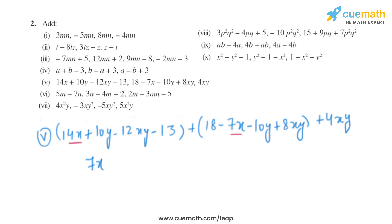For the xy terms: minus 12xy plus 8xy gives us minus 4xy, and plus 4xy gives us 0. For the constants: minus 13 plus 18 gives us plus 5. So the final answer for part 5 is 7x plus 5.